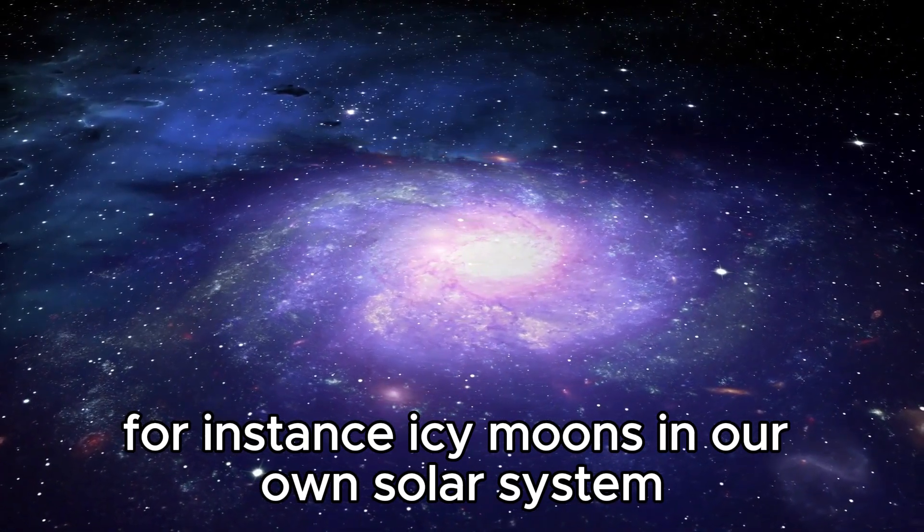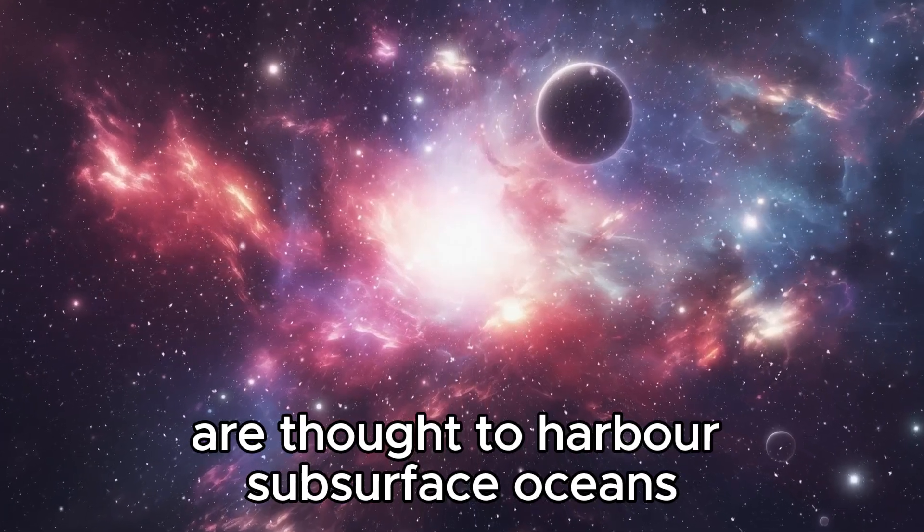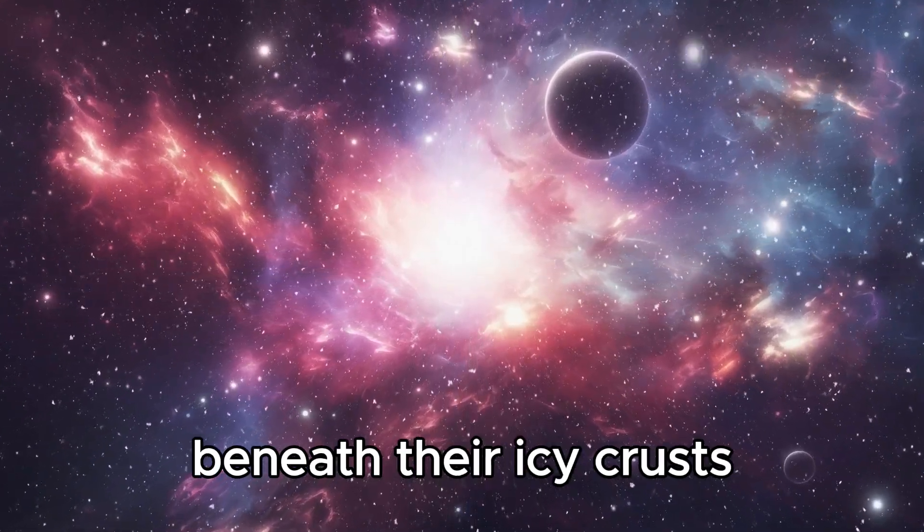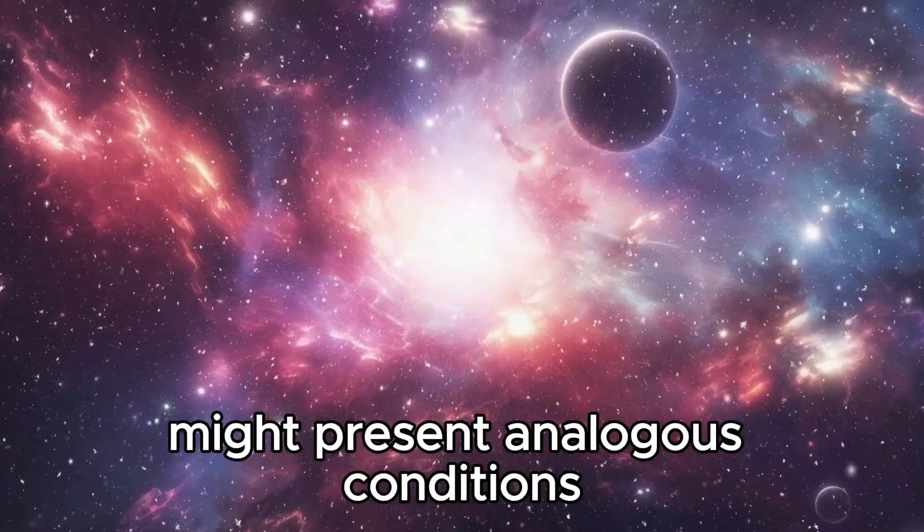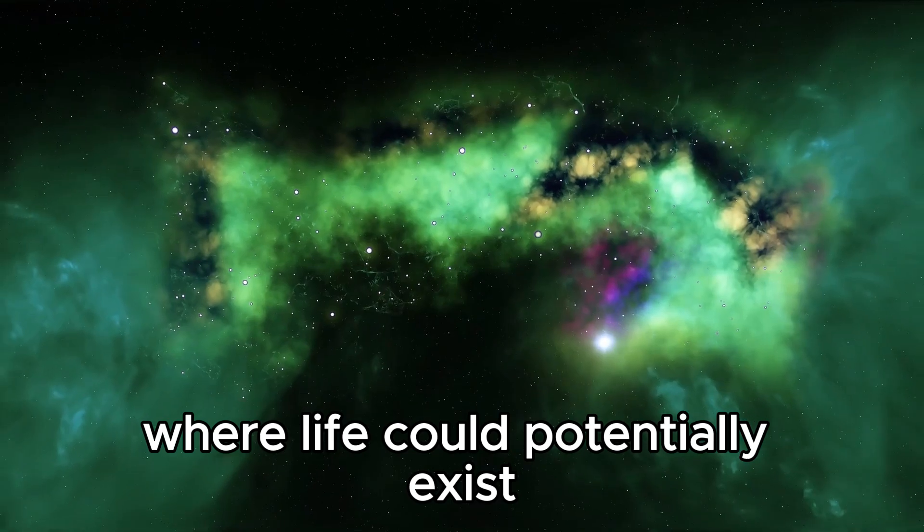icy moons in our own solar system, such as Europa and Enceladus, are thought to harbor subsurface oceans beneath their icy crusts. Similar moons orbiting exoplanets might present analogous conditions where life could potentially exist.